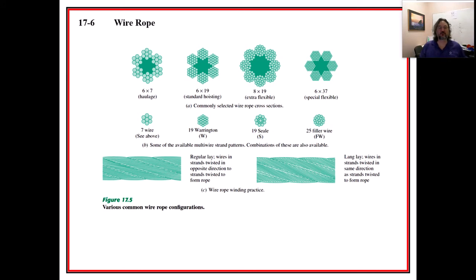First off, it's made up of small wires that are wrapped together to form a strand, and then the strands are wrapped together quite often around some kind of core. So they're given these designations: you'll see 6 by 7, 6 by 19, 8 by 19, 6 by 37. And what those are is the first is the number of strands and the second is the number of wires.